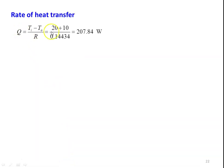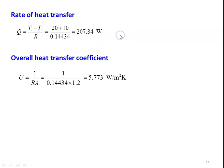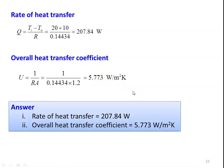The rate of heat transfer Q = (Ti − T∞)/(R_total) = (20 − (−10))/0.1134 = 207.84 W. The overall heat transfer coefficient U = 1/(R_total × A) = 1/(0.1134 × 1.2) = 5.773 W/m²·K. The answers are: rate of heat transfer = 207.84 W and overall heat transfer coefficient = 5.773 W/m²·K.